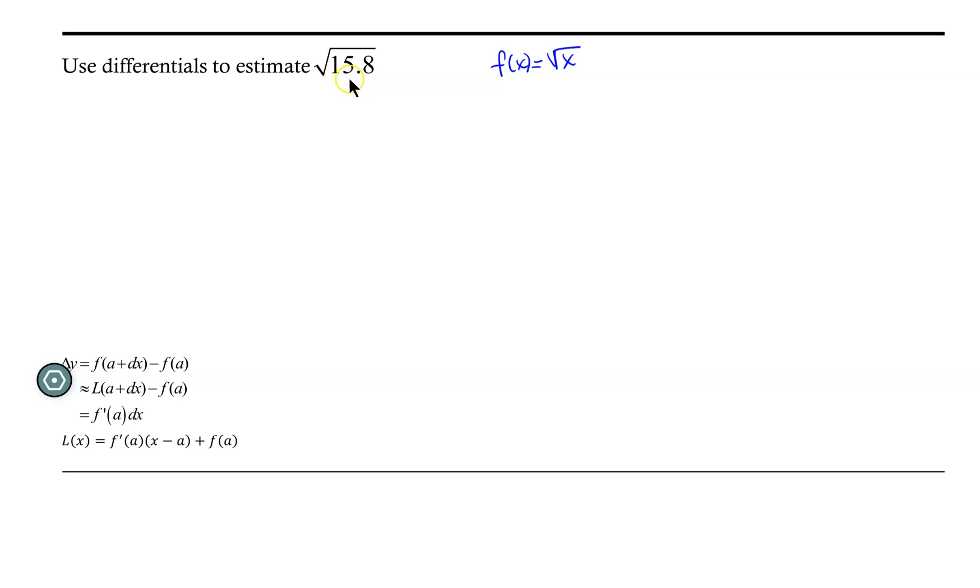Well, 15.8 is close to 16, and the square root of 16 is something that can be easily evaluated. So, in this case, we'll choose a to be 16. Now, we're doing this because the square root of 15.8 is close to the square root of 16 because 15.8 itself is close to the number 16.